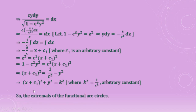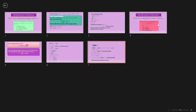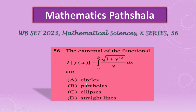The extremals of the functional are circles. Among the options — circles, parabolas, ellipses, or straight lines — option A is the correct answer. Thank you; if you like this video, please subscribe to our channel and support us.